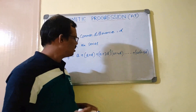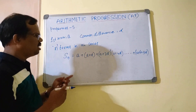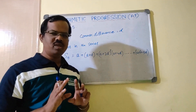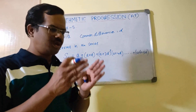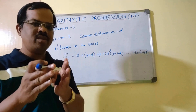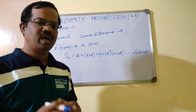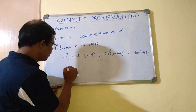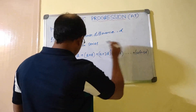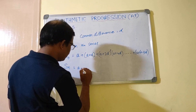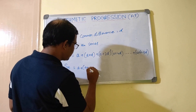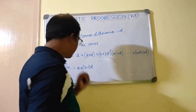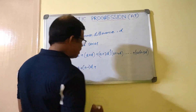This looks complex, but let me simplify it. I will put the series in reverse order — and the sum never changes whether you add forward or backward; this is the commutative property of addition. I will bring the last number to the front: so the series in reverse starts with a plus (n minus 1) into d at the front, then a plus (n minus 2)d as the second number.